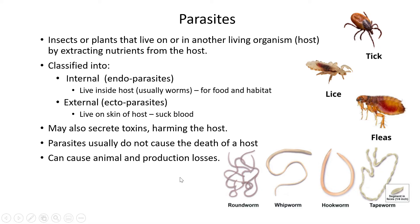External parasites, or ectoparasites, usually live outside on the skin of the animal and suck the blood of the host. Examples include fleas, lice, and ticks. They live literally on the skin and have specialized mouthparts that attach themselves to the skin of the animal and then suck blood from it.